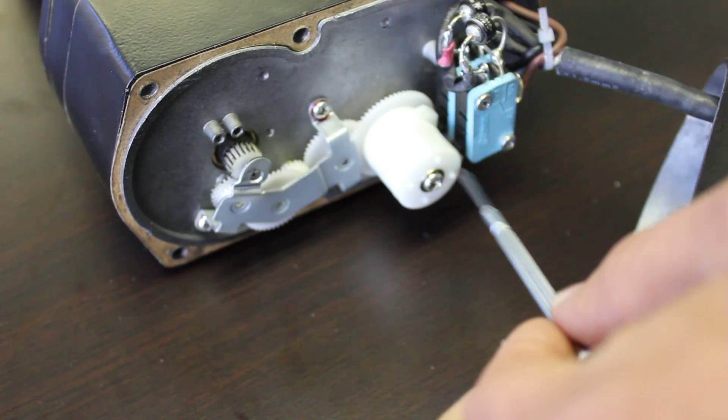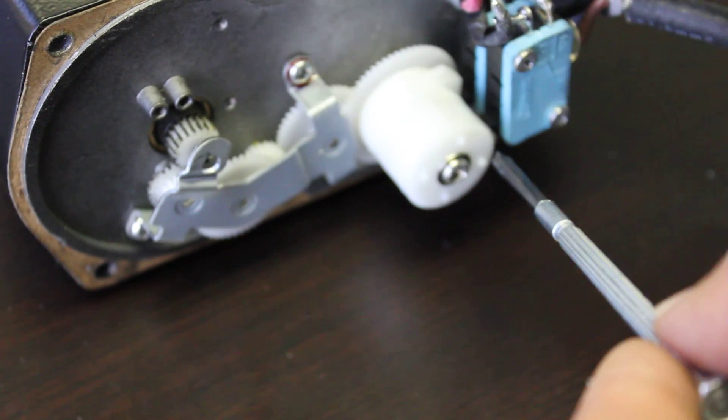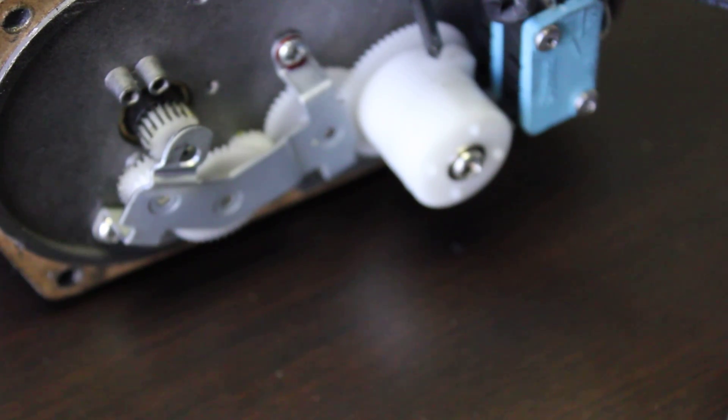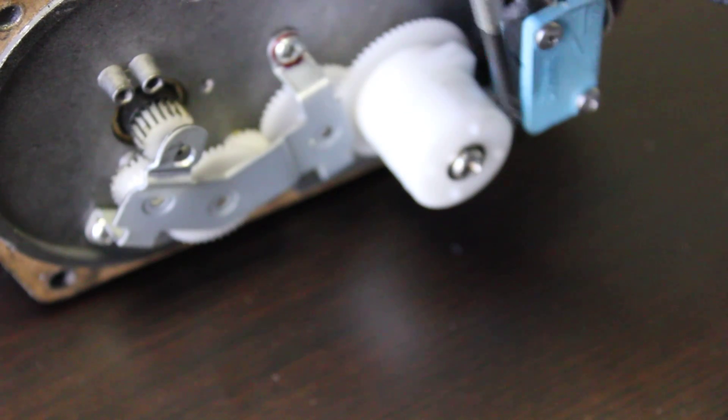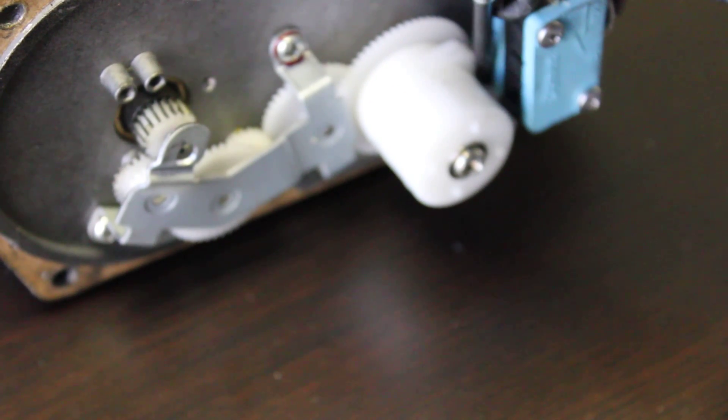And you'll notice right over here, this is where the limit switches are located. Basically how it works is there's a little arm on the lower and upper limit of the limit switch that turns as you extend or retract. That arm ends up touching the limit switch, which cuts the power.